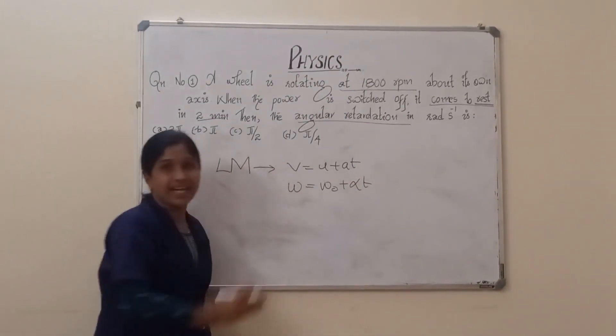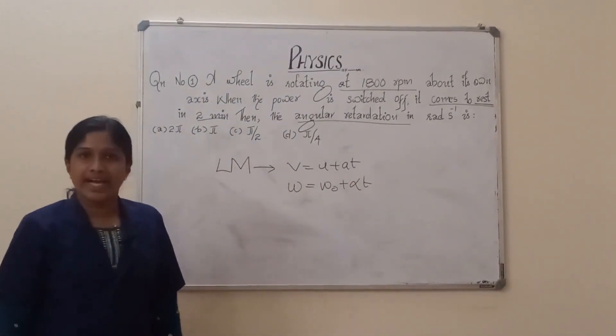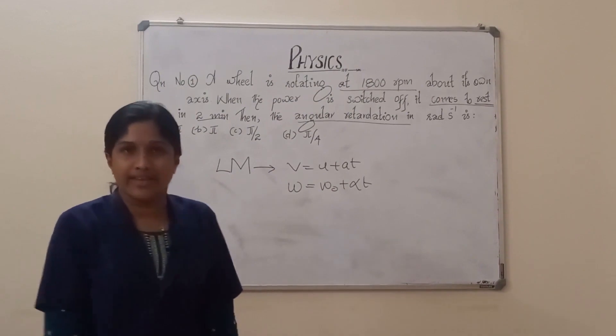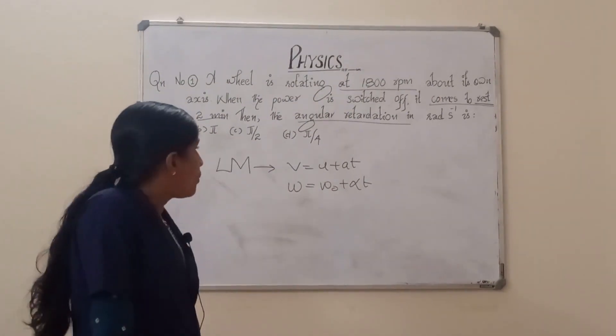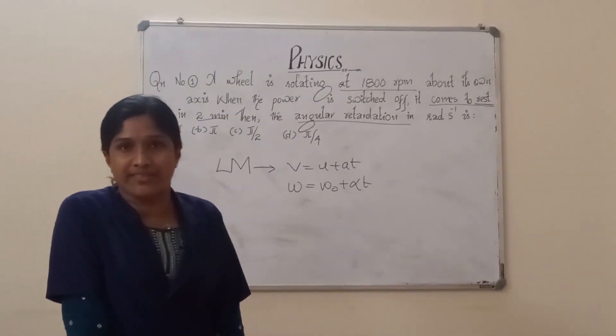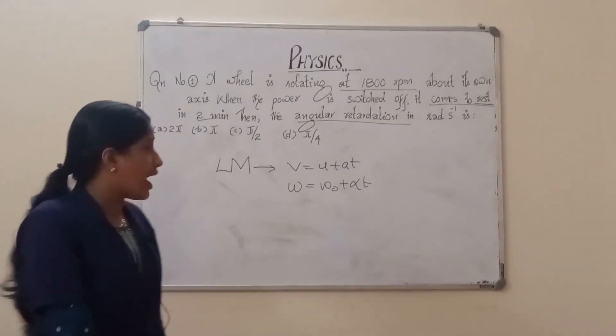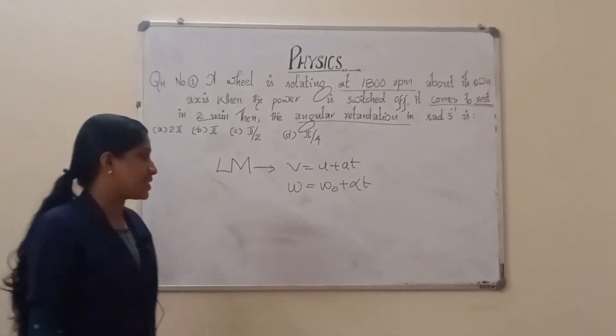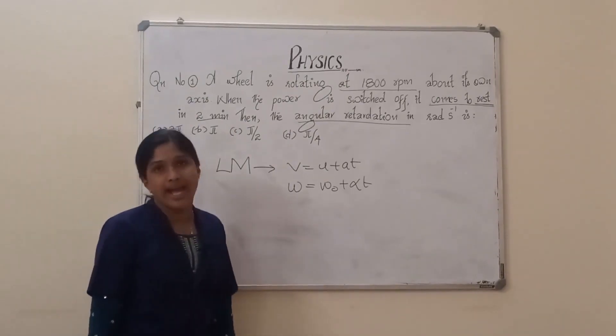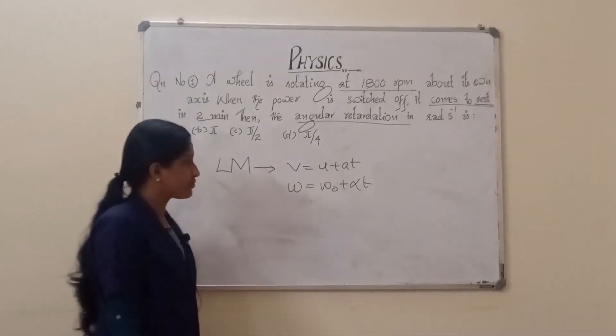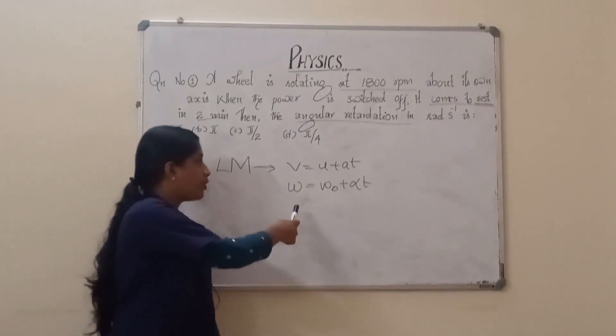Here, ω is the final angular velocity, ω₀ is the initial angular velocity, and α is the angular acceleration.